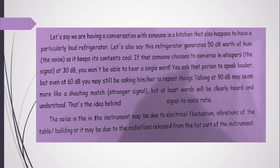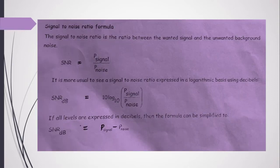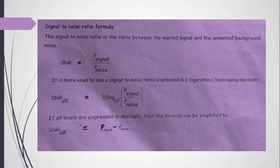Noise in an instrument may be due to electrical fluctuations, vibrations of the table or building, or radiation released from hot parts of the instrument. We have a formula to determine the signal to noise ratio: it is the ratio between the wanted signal and unwanted background noise, represented as SNR = P_signal / P_noise. In log form expressed in decibels, the formula simplifies to: SNR(dB) = P_signal(dB) − P_noise(dB).